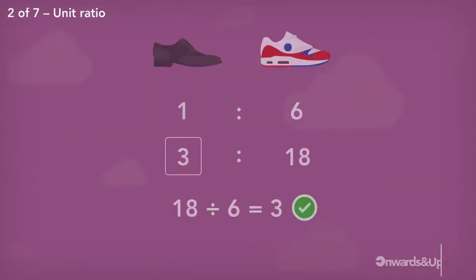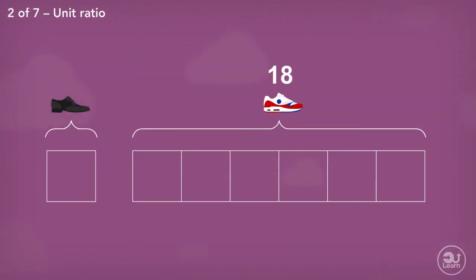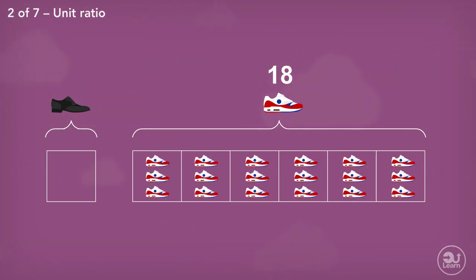Alternatively, we could calculate the number of smart shoes by recognizing that 18 shoes fit exactly into six parts. So to find out the number of shoes that represent one part, we can divide 18 by the number of parts. Each part represents three shoes. And since smart shoes represent one part, Chima must have three smart shoes.